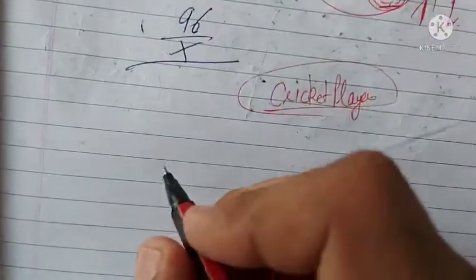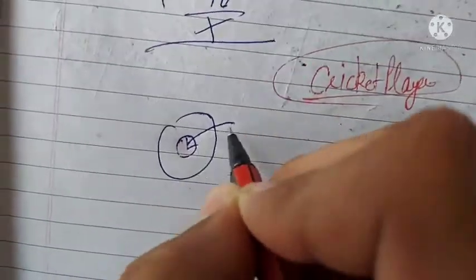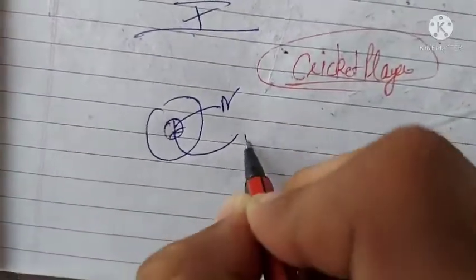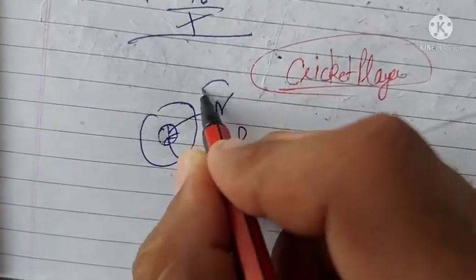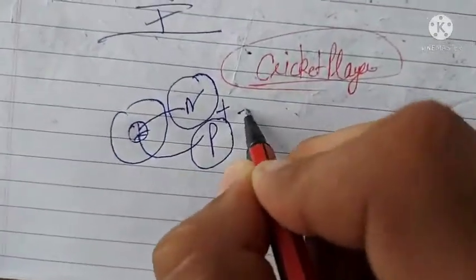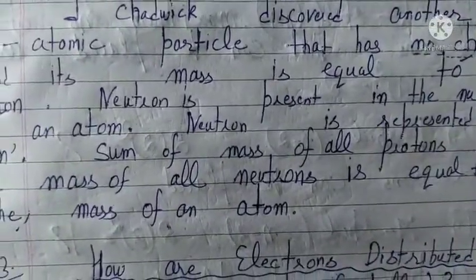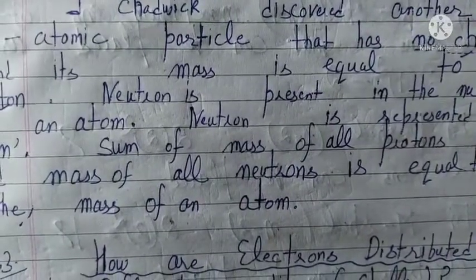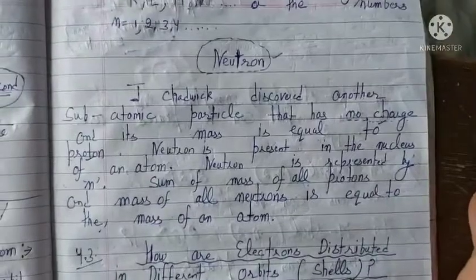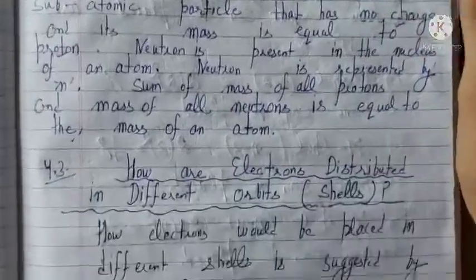In an atom, neutrons are also present in the nucleus, and we know protons are also present in the nucleus. The sum of the masses of all the neutrons and the sum of the masses of all the protons together make the mass of an atom. So the mass of an atom equals the sum of the mass of all protons and the mass of all neutrons.